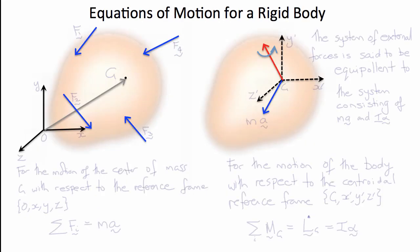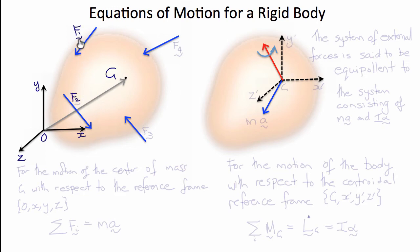We are now ready to apply the equations of motion to a rigid body with center of mass G, with respect to a reference frame with origin O and coordinates x, y, z. External forces acting on the body are F1, F2, F3, and F4.